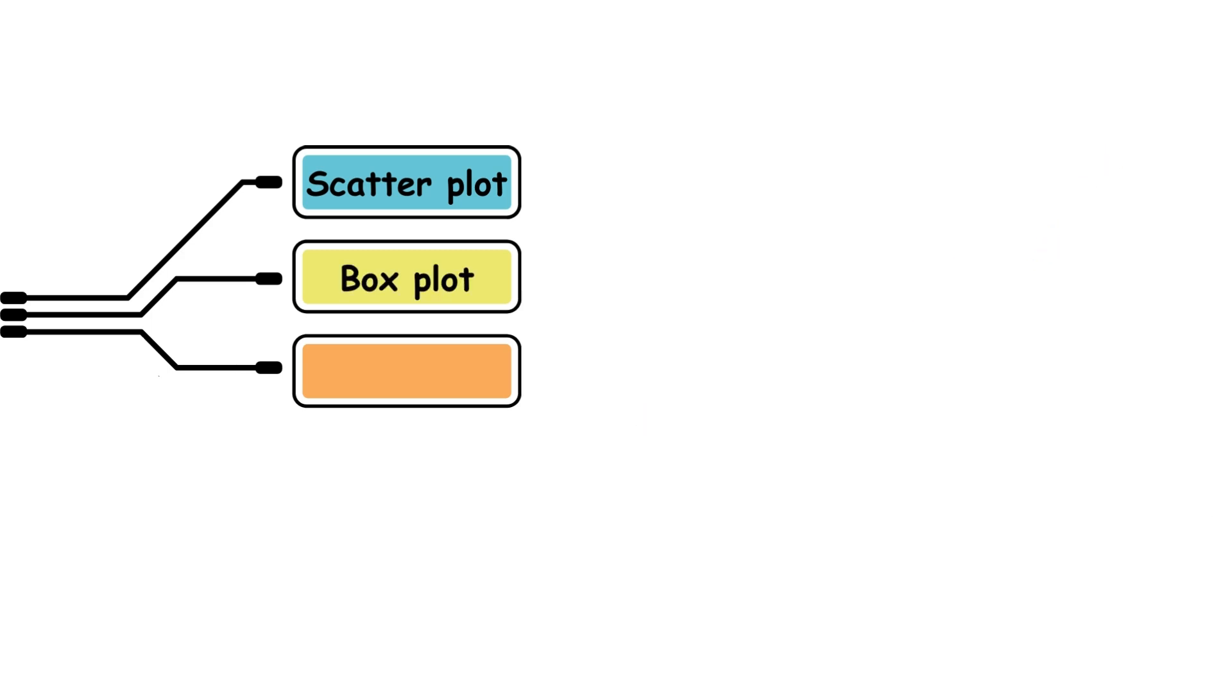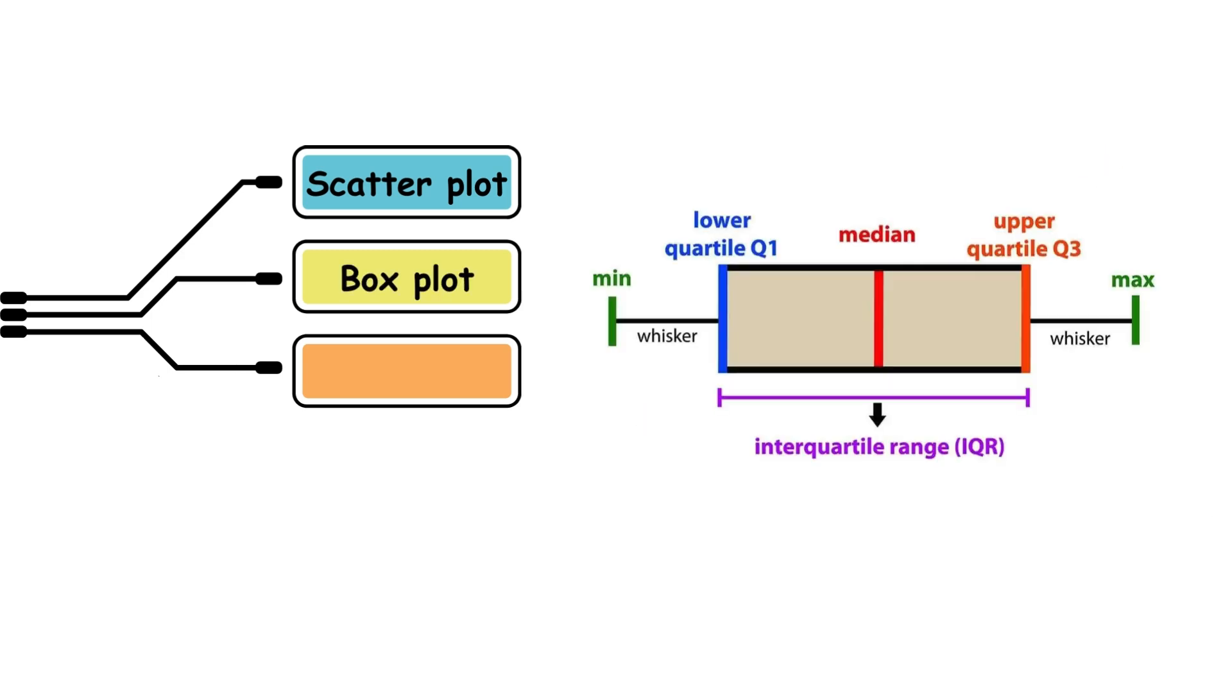2, box plot. A way of representing the distribution of single variable data. It shows the minimum, first quartile, median, third quartile, and maximum of the dataset.